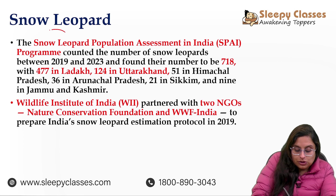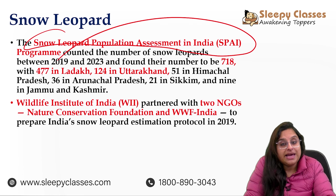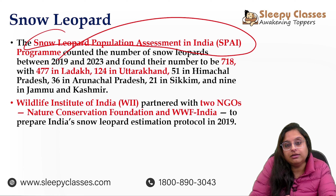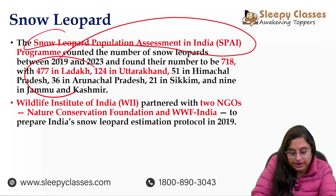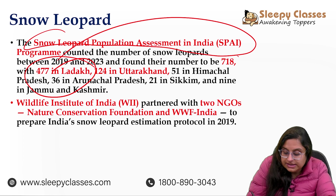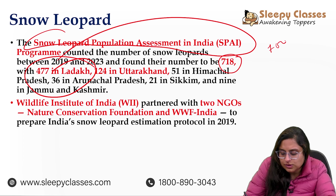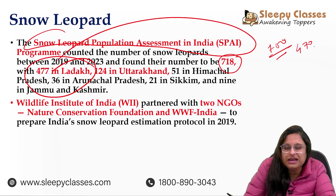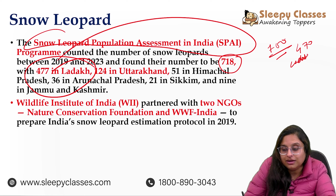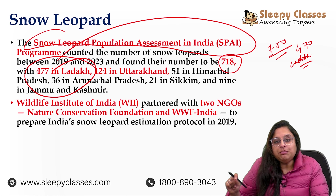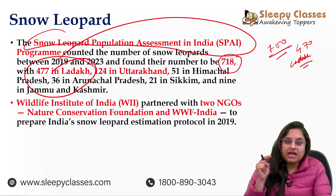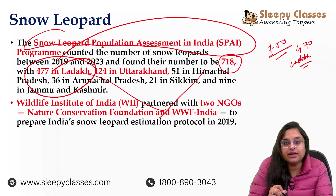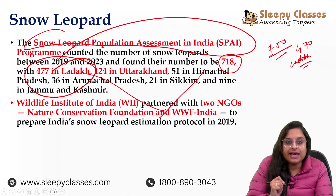Snow leopard population assessment in India pehli baar hua. Aur iske hisaab se sabse zyada jo hamare snow leopards hain woh Ladakh mein hain — 477. Out of the total 718. Aap yaad kar lo — 700 total hai, isme se 470, kareeban 500, aapko Ladakh mein mil raha hai. Doosre number pe Uttarakhand hai, aur teesre number pe Himachal hai — 51. Aur ek cheez ye bhi yaad kar sakte hain ki Ladakh aur Himachal mein jo hai na, state animal bhi kehlata hai ye.